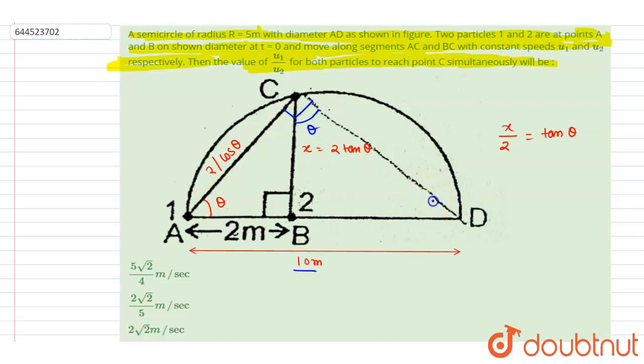This angle will be theta again, and this angle will also be 90 minus theta. You can also see by looking at triangle ADC - this angle is theta, and if you see this angle is 90, then this angle will be 90 minus theta. Now if you see here...